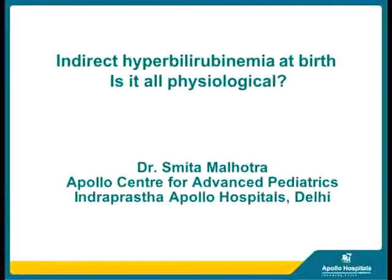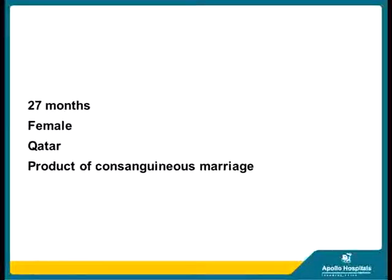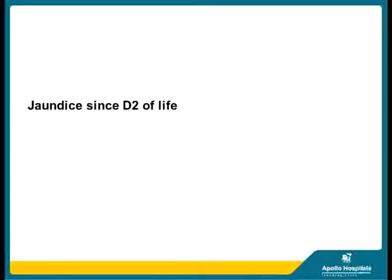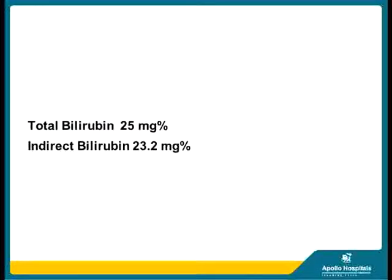Good afternoon, everyone. I shall be presenting a case of indirect hyperbilirubinemia at birth. This baby came to us at 27 months of age from Qatar. She was a product of a consanguineous marriage. She had jaundice since day two of life. Her total bilirubin was 25 mg% and the indirect fraction was 23.2 mg%. So we have jaundice from day two of life with total bilirubin 25, indirect 23.2 — what comes to mind?